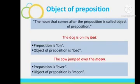The last thing you should know is the object of a preposition. A noun that comes after a preposition is called the object of the preposition. For example, 'The dog is on my bed' — 'on' is the preposition and 'bed' is the object of the preposition. 'The cow jumped over the moon' — 'over' is the preposition and 'moon' is the noun, acting as the object of the preposition.